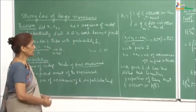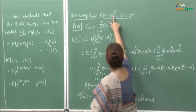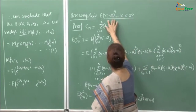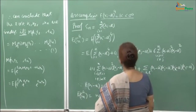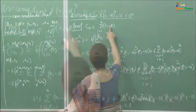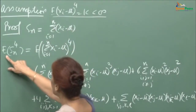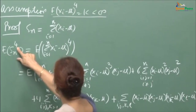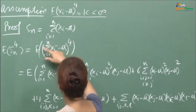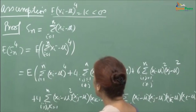Now let us prove the result. We assume that E[(x_i - mu)^4] = k < infinity, meaning the fourth moment about the mean is finite. Define s_n = sum_{i=1}^{n} (x_i - mu). Then we want to compute E[s_n^4], which is the expectation of (sum_{i=1}^{n} (x_i - mu))^4.